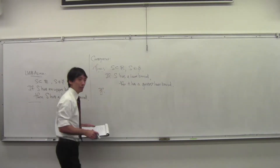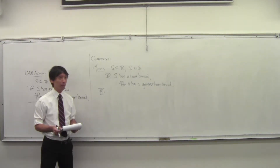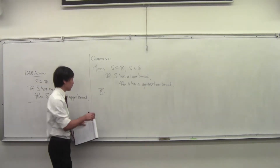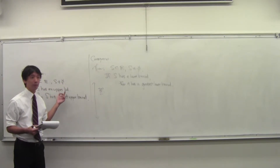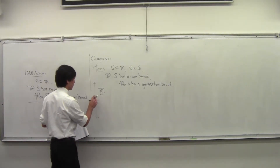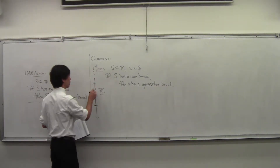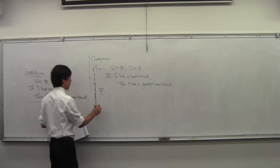Does anybody know the idea of the proof? Can anybody guess what we're going to do? We're going to use the least upper bound axiom to prove this. So you have some set S, it has a lower bound. Maybe it has no upper bound.